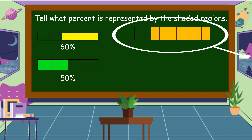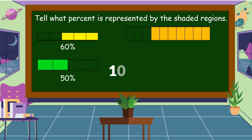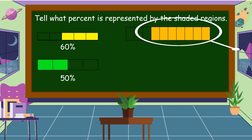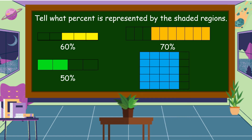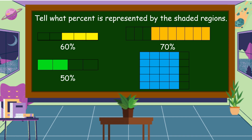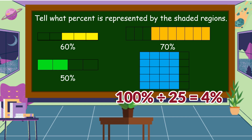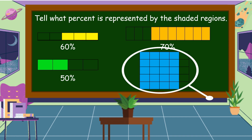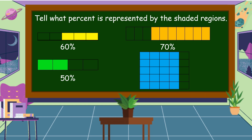This figure is divided into ten equal parts, so 100 percent divided by ten is equal to 10 percent. The shaded part is 70 percent. For the last figure, it is divided into 25 equal regions, so 100 percent divided by 25 is equal to 4 percent. There are 20 shaded regions, so the answer is 80 percent.